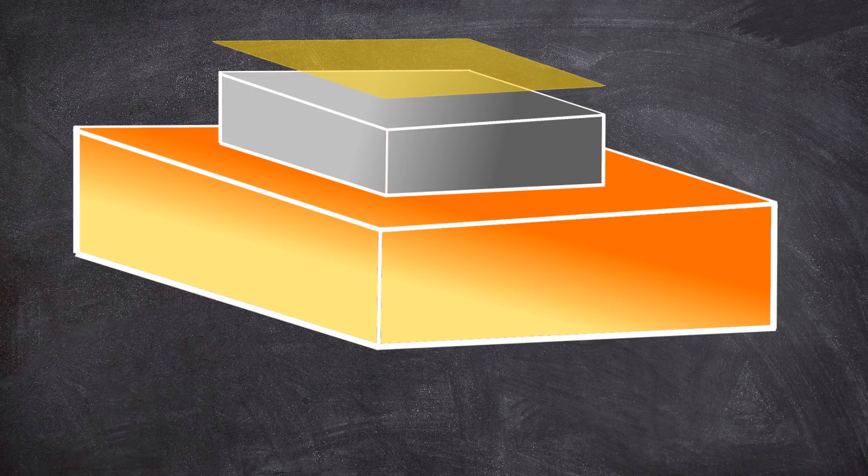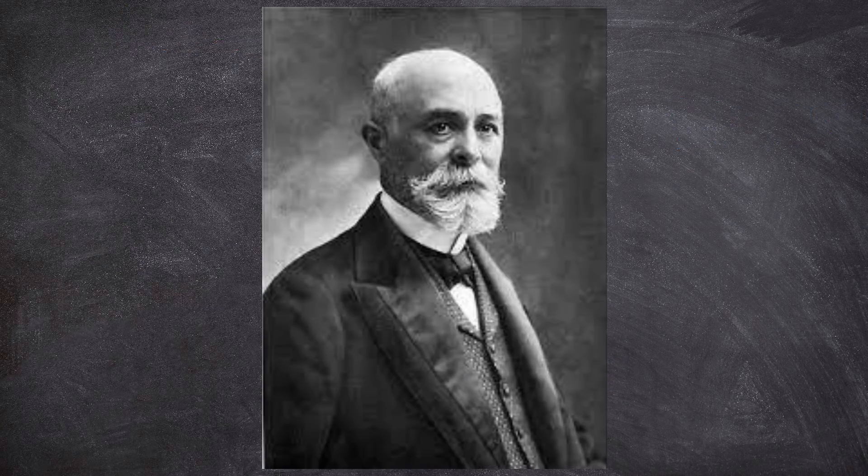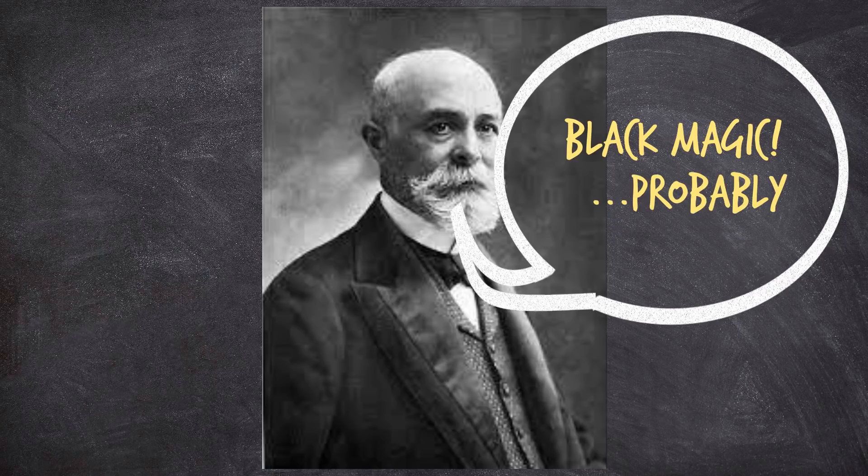You see, Fritz, by accident, by sandwiching selenium, which is what we now call a semiconductor material, between two different metals, had created the basic ingredients needed to create a solar cell, though he had no clue why and had no idea how it worked and therefore how to improve it.